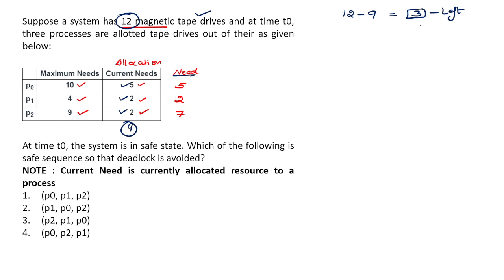So at first when we move to process P0 to fulfill its requirement, process P0's need is 5, but we have only 3 left, so we cannot fulfill the request of P0. So P0's request cannot be fulfilled first. That's why we marked P0 options as wrong.